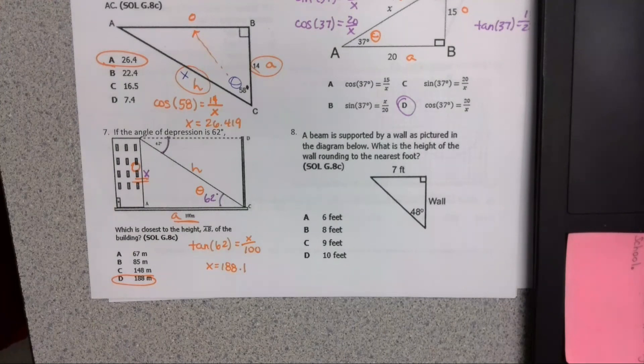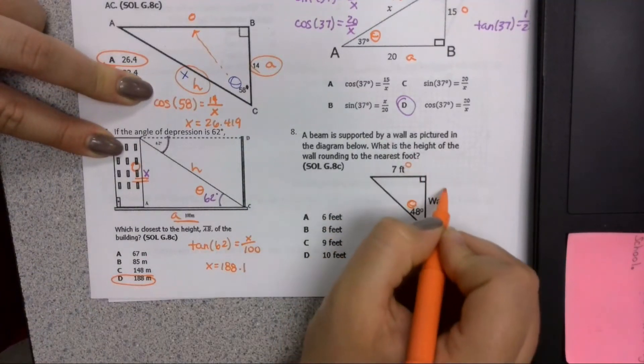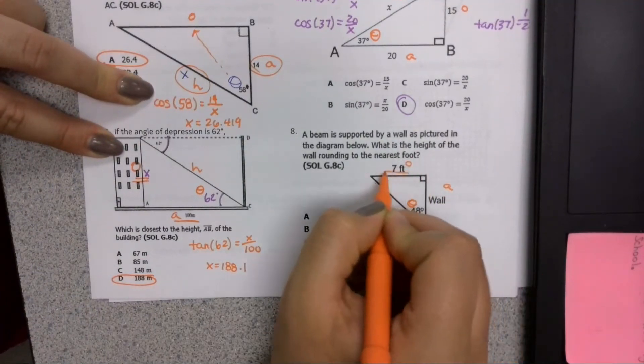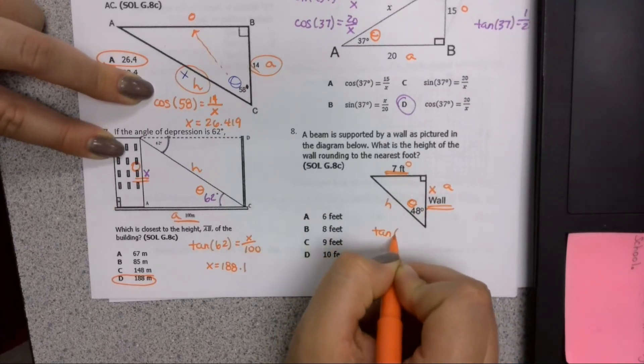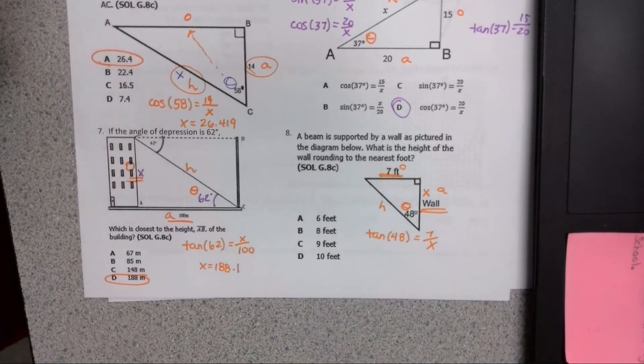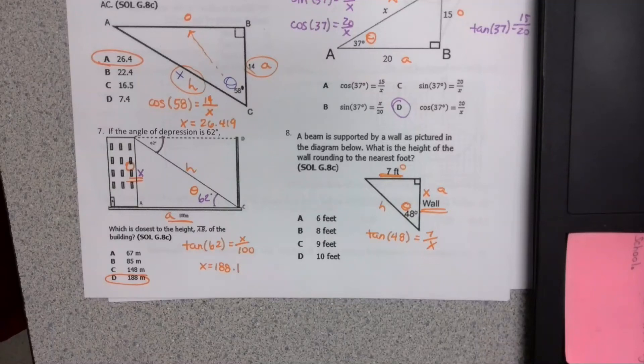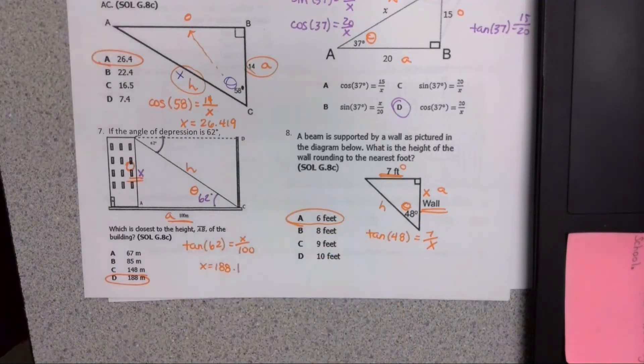A beam is supported by a wall, and we need to find the height of the wall. So we are dealing with tangent again, because this is where x is. So tangent 48 equals 7 over x, and we just type that straight into Desmos. We're going to get 6.302, and the closest to that is 6.